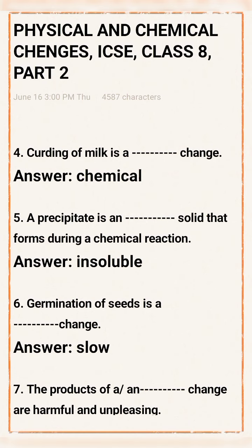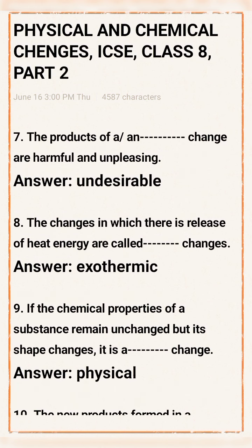Question 6: Germination of a seed is a ___ change. Answer: Slow change. Question 7: The products of a/an ___ change are harmful and undesirable. Answer: Undesirable.